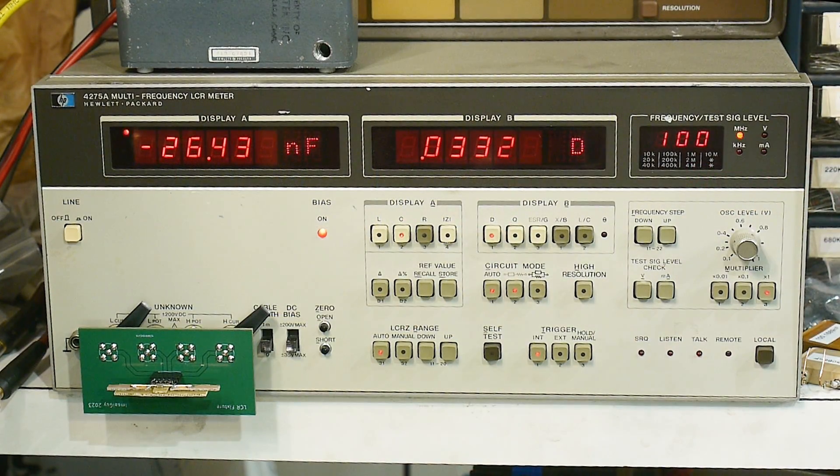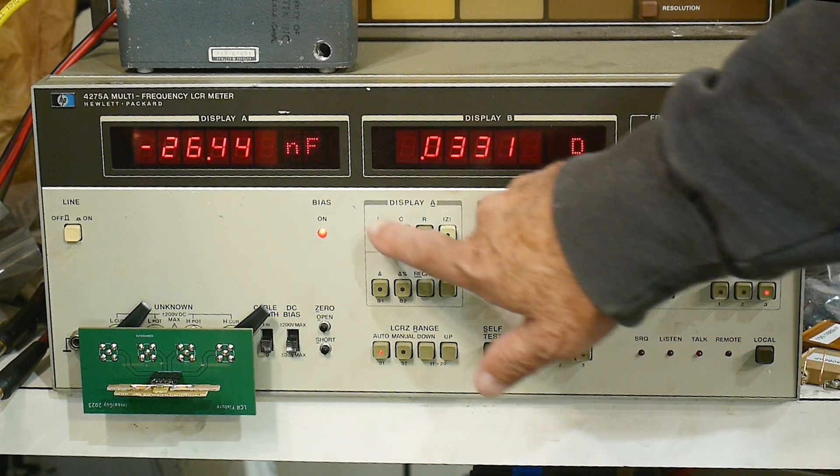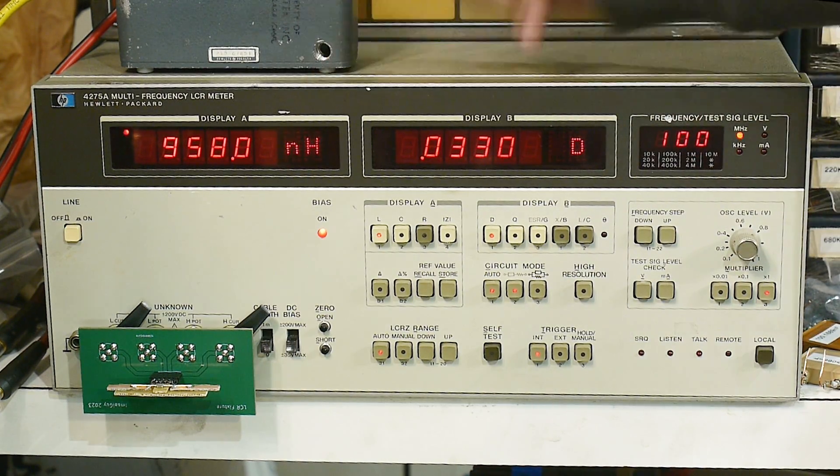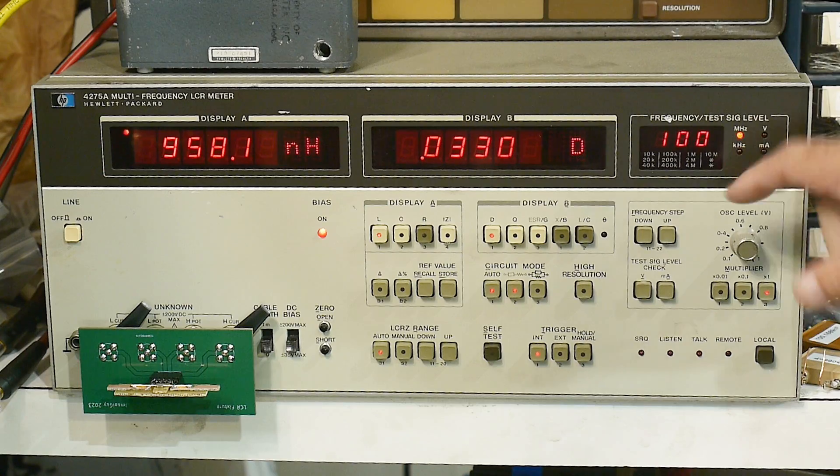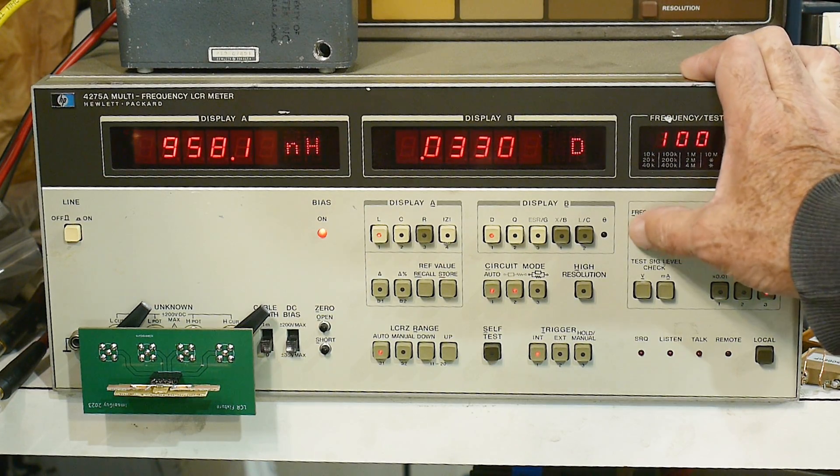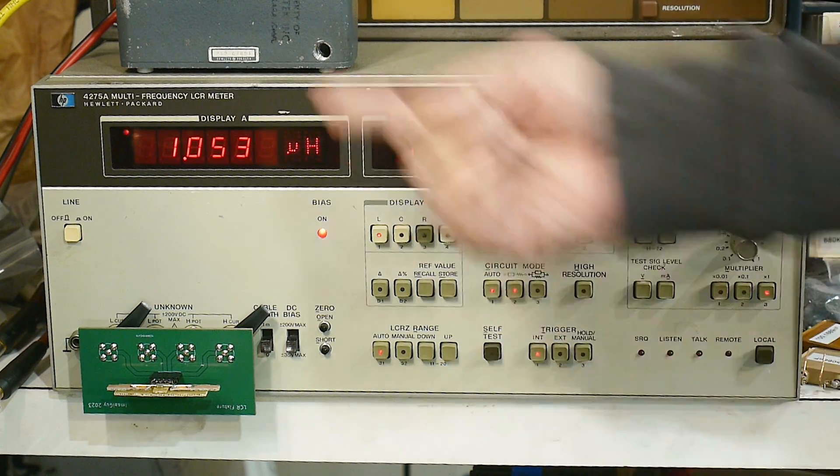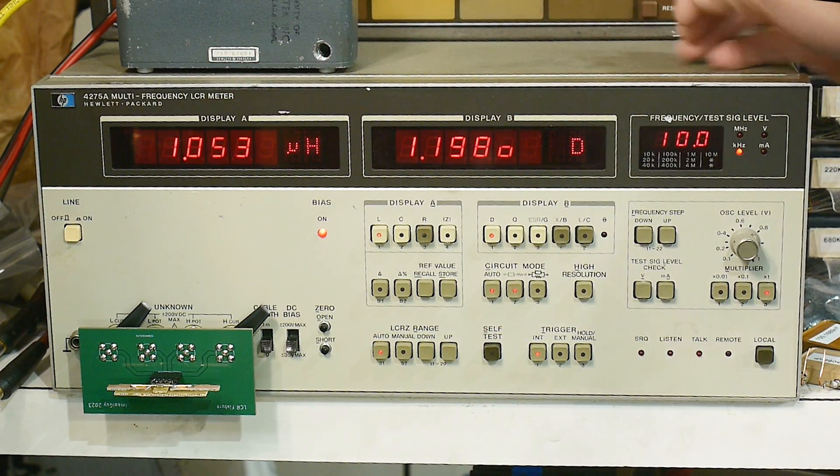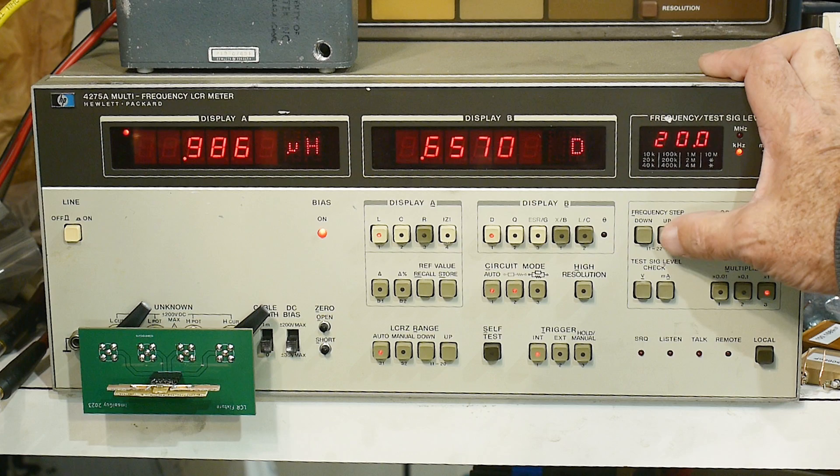We need to go to inductance. 958 nanohenries. We're at too high of a frequency, so let's go down to 10 kilohertz. 1.053 microhenries. And if we up the frequency, 20 kilohertz, 40 kilohertz, 100 kilohertz.